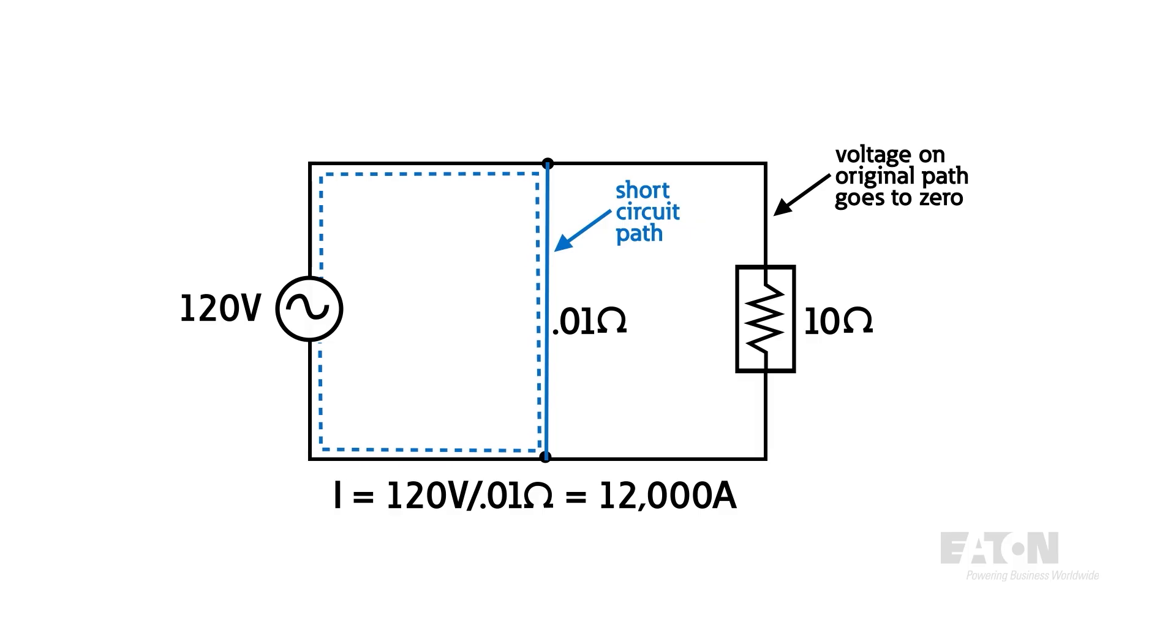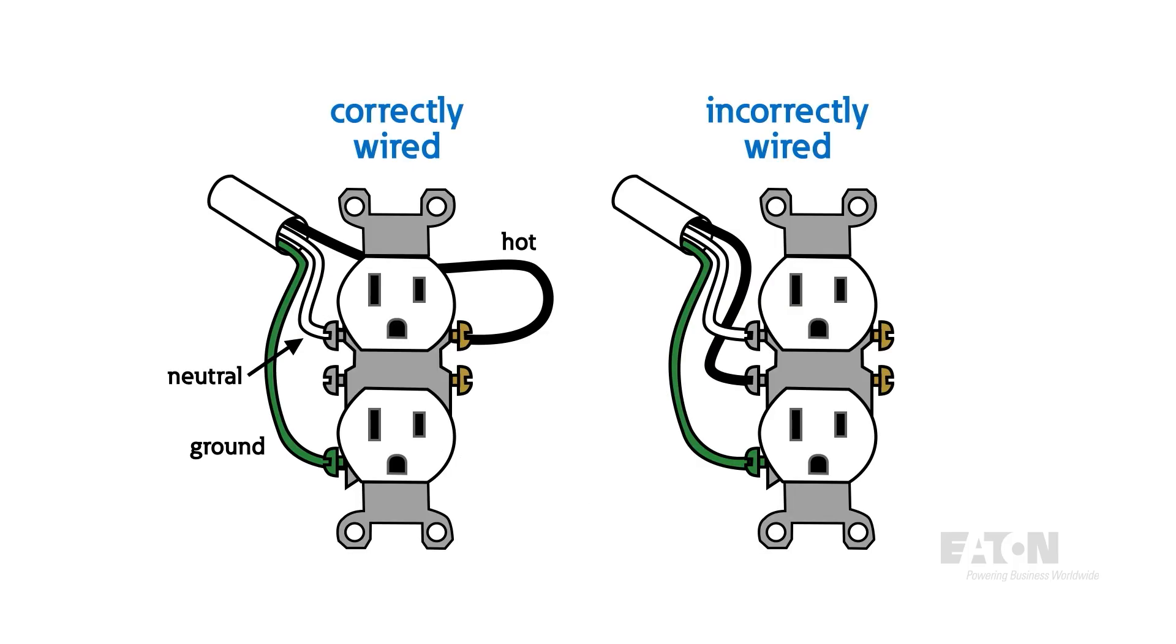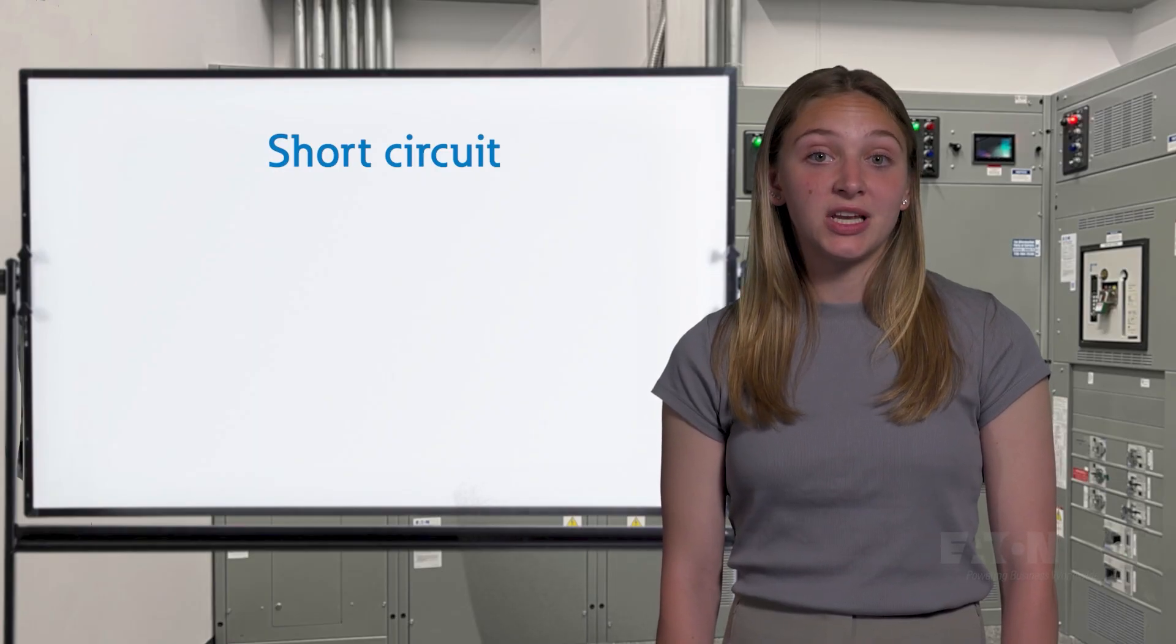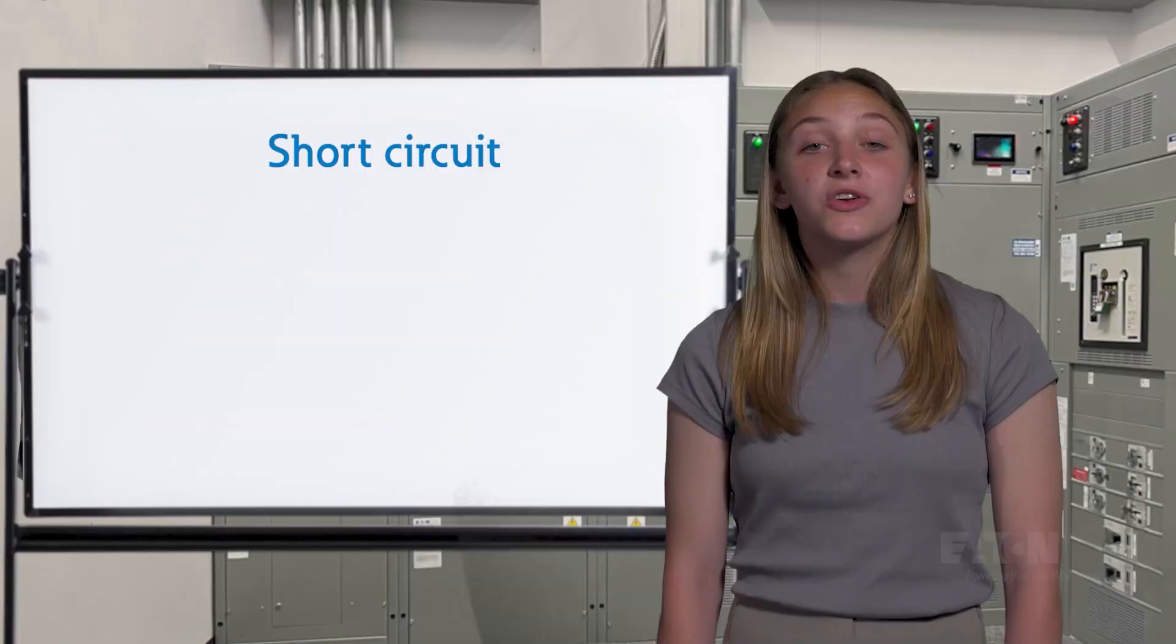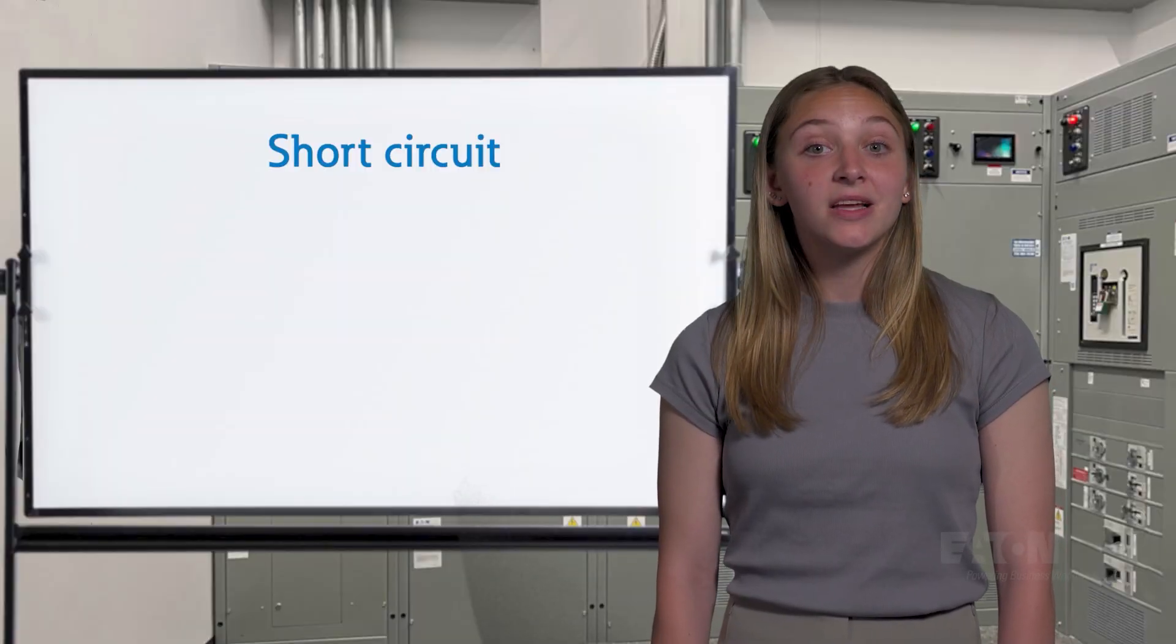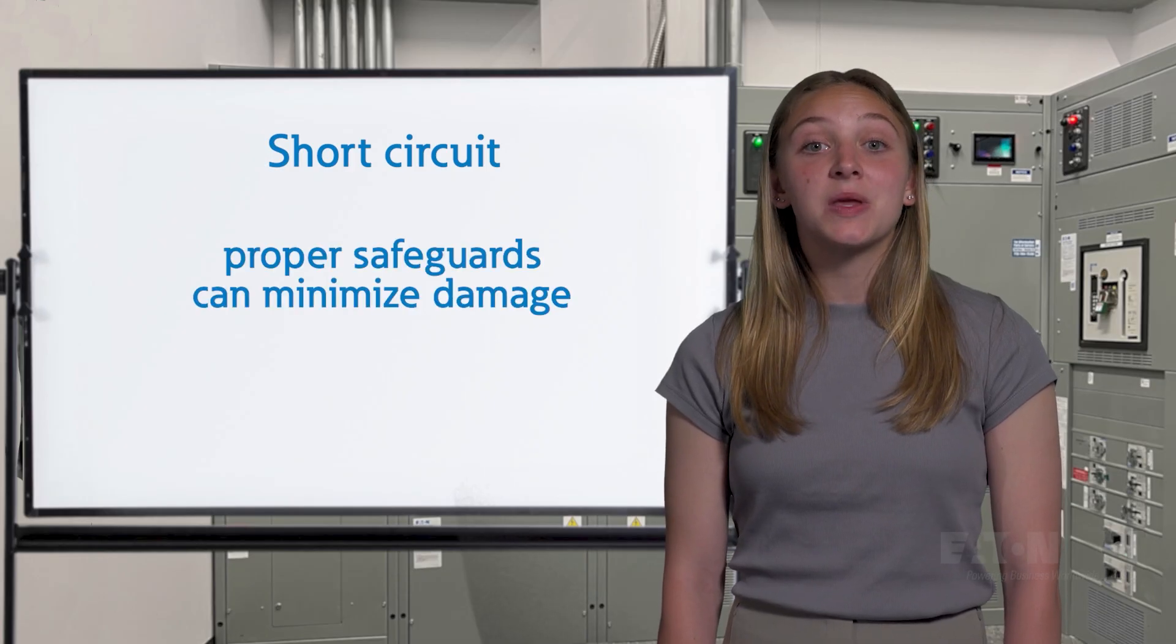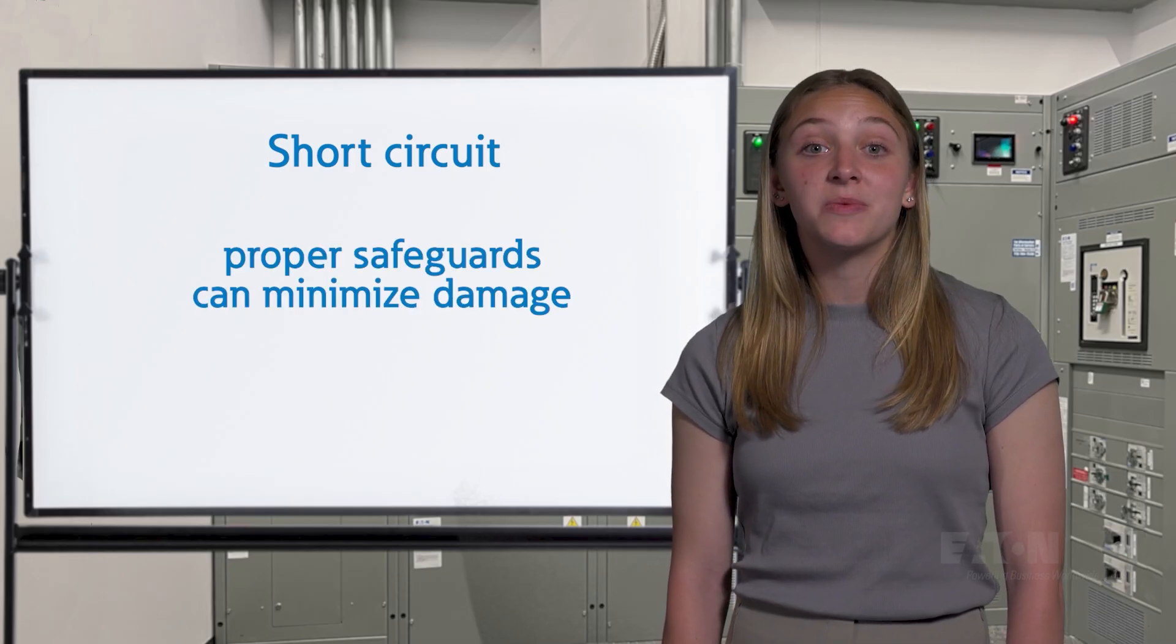In a residential setting, this might be due to a miswired outlet where the hot and neutral are touching. For utility distribution, a tree branch may fall onto power lines, creating a path to ground. Sometimes these faults are unavoidable, but with proper planning, we can put in place proper safeguards to minimize damage.